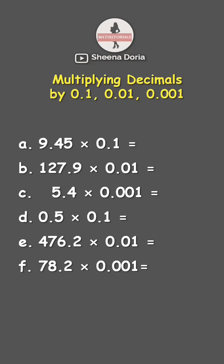How to multiply decimals by one-tenths, one-hundredths, and one-thousandths. For example, we have 9.45 times one-tenth.